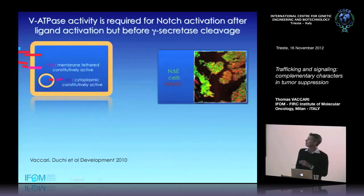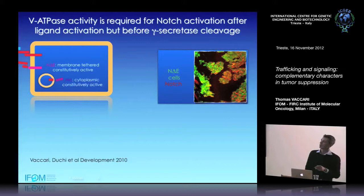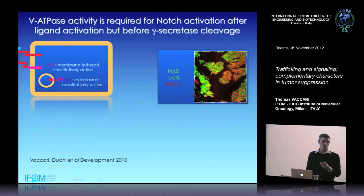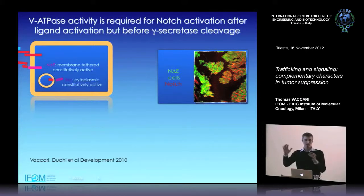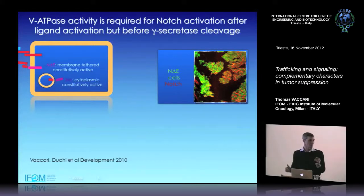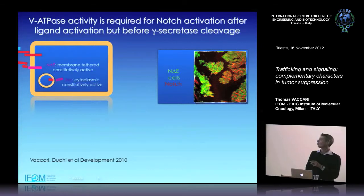To demonstrate this, we took an activated form of Notch called Notch ΔE, which lacks the extracellular domain but is still attached to the membrane — constitutively active because it doesn't need ligand and can be cleaved by gamma-secretase. When expressed in patches of cells shown in green, these cells grow very well because Notch supports proliferation, and you get very large clones.